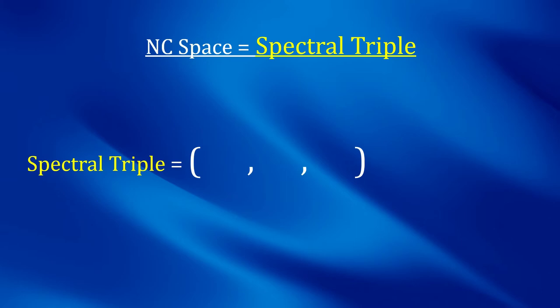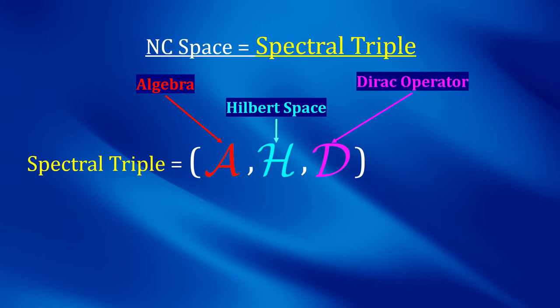Now, let's get just a little bit more technical. How can we describe non-commutative spaces in practice? We can do this through a so-called spectral triple, which consists of three elements: an algebra of operators, a Hilbert space on which the operators act, and finally, a differential operator called the Dirac operator.